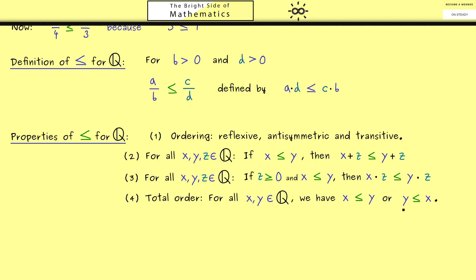OK, now the fifth property here is the so-called Archimedean property. Also, this one fits in with our picture of the number line.